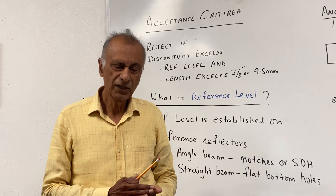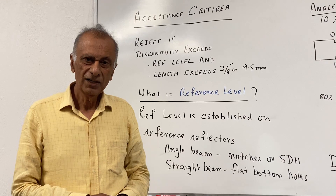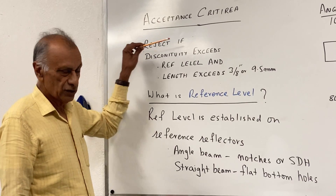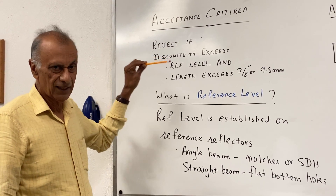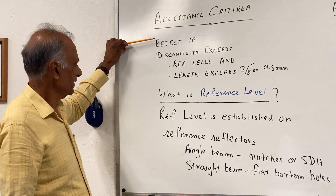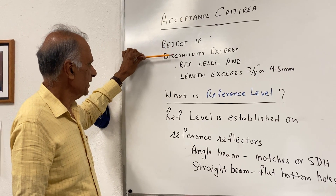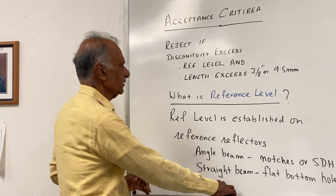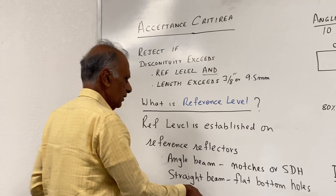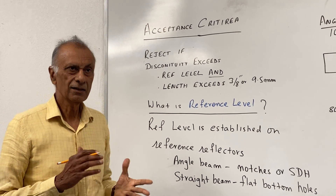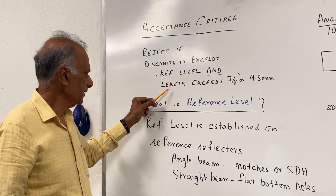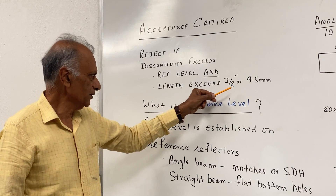The specification to which you are doing the inspection will define the acceptance criteria. For this lecture, I will give you an example of an acceptance criteria. Let's say we are doing weld inspection for piping, and in this case the acceptance criteria is: reject discontinuities if they exceed the reference level and the length exceeds 3/8 of an inch or 9.5 mm. So we will only reject a discontinuity if it exceeds the reference level and the length exceeds 3/8 of an inch or 9.5 mm.